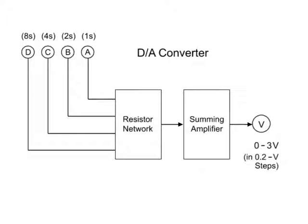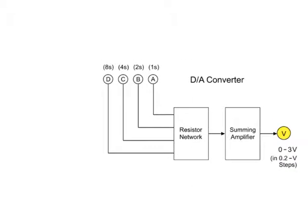Consider the possible binary inputs at D, C, B, and A, and the corresponding voltage output based on the following truth table.